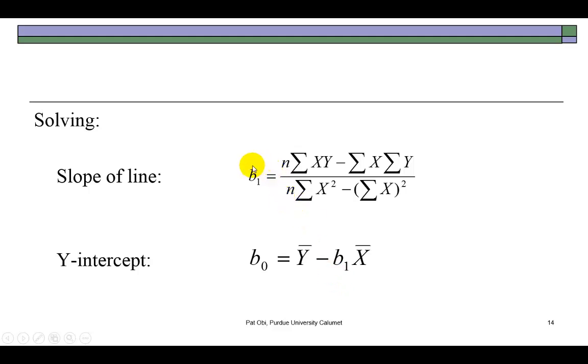This tells us that the slope of the line b₁ equals, in the numerator, the sample size multiplied by the sum of the product of X and Y values, and then we subtract the sum of the values of X multiplied by the sum of the values of Y. In the denominator, we take the sample size and multiply that by the sum of the squared values of X, and then subtract. This is the sum of X, after you get the sum of X, then you square it.